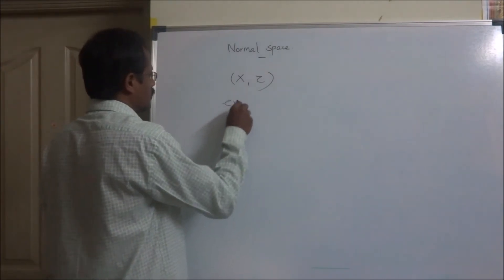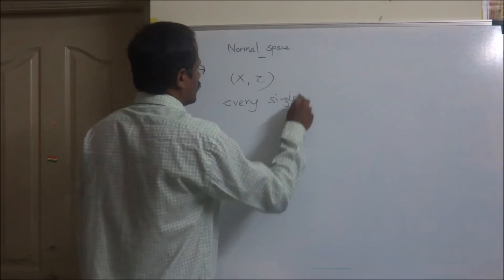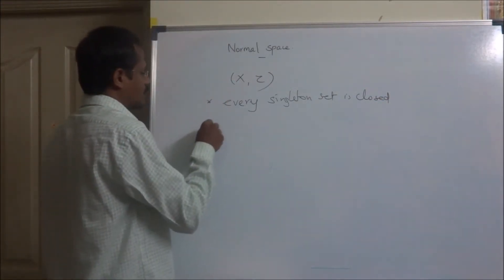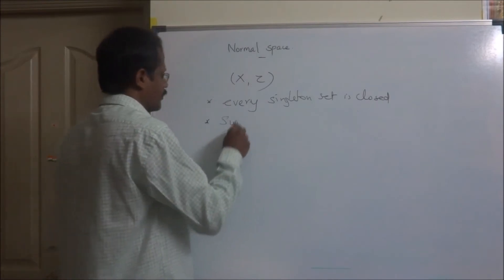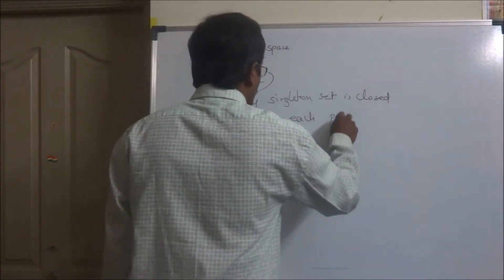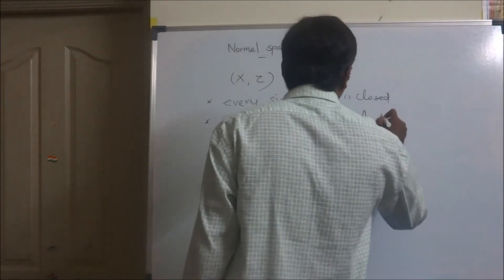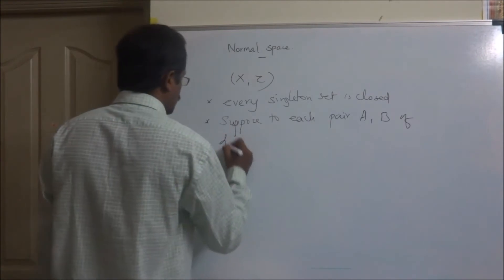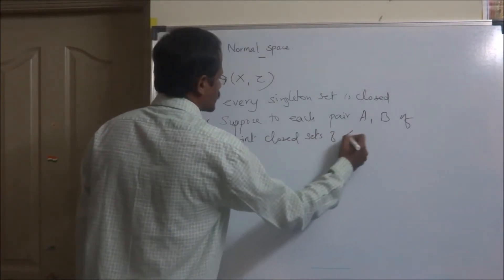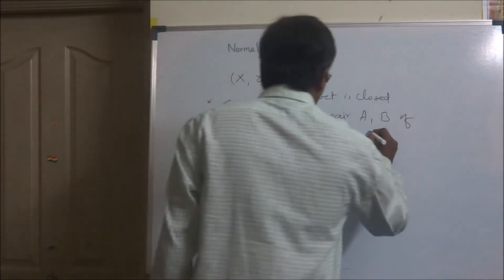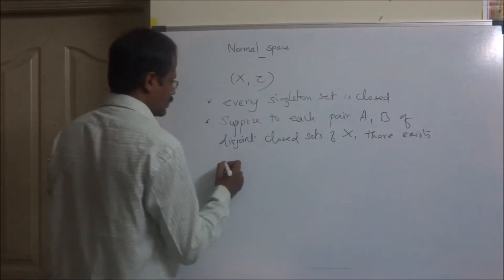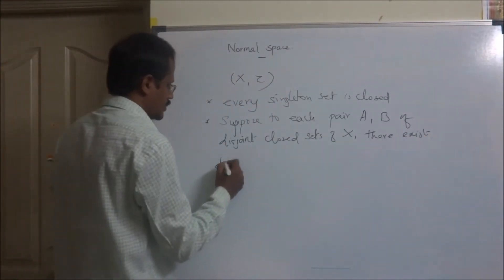Every singleton set is closed. The second condition: suppose, for each pair A, B of disjoint closed sets of X, there exist disjoint open sets.